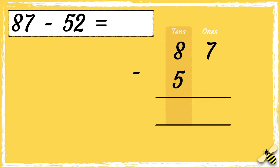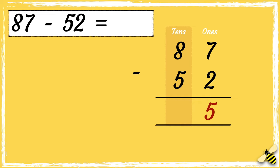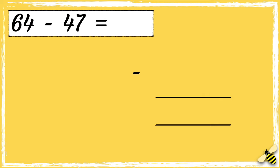The number 52 has five tens and two ones. Now that we're set up, we can subtract the digits in each column starting from the right. Seven take away two is five, eight take away five is three. So the answer is 35. Let's have a look at another example: 64 take away 47.